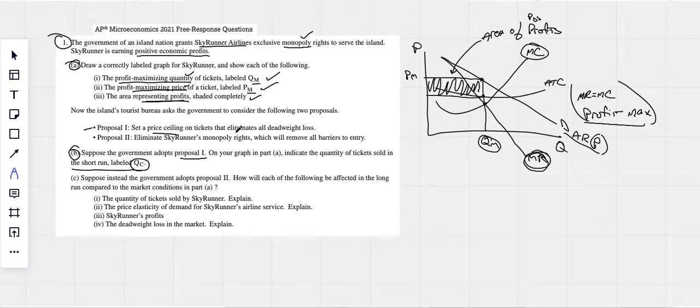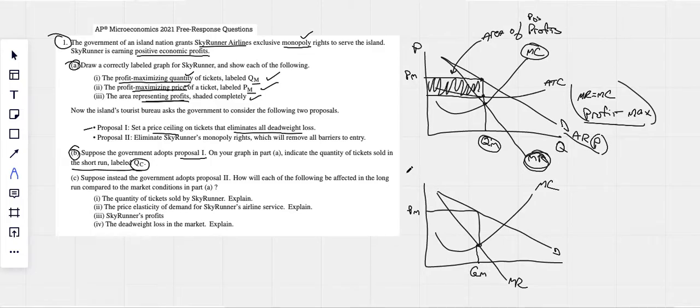So we want a price ceiling that eliminates all deadweight loss. So what we should know, let's draw, I'm going to draw a separate graph here. I mean, I think I could show it up here pretty easy and I will show what you needed to do up here, but I just want to show it a little bit differently here. Again, here's our demand, here's our marginal revenue. We've got our marginal cost curve here. I like that one a little bit better. Here's where profit max is. Price, PM and QM. This is P and Q. Don't forget your P's and Q's, I'll take points off.